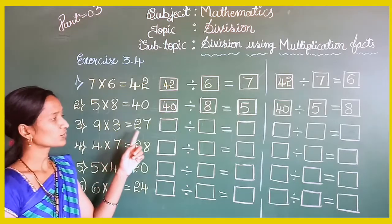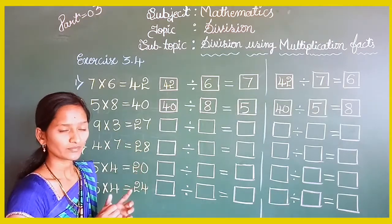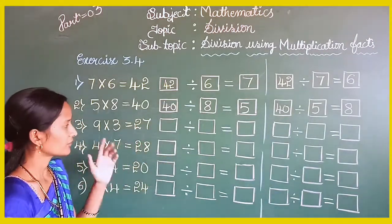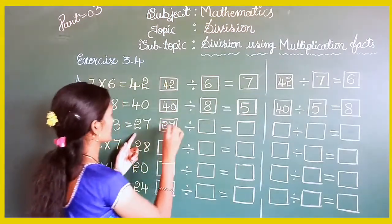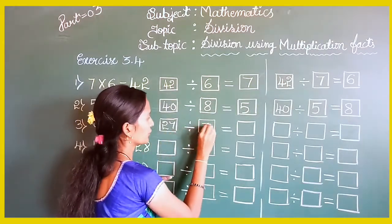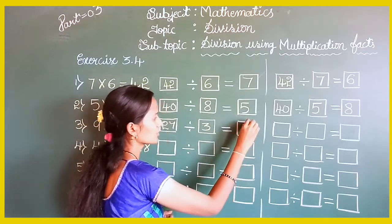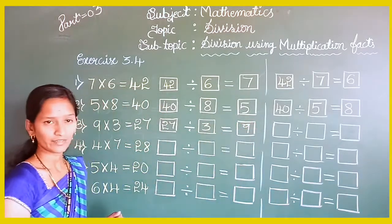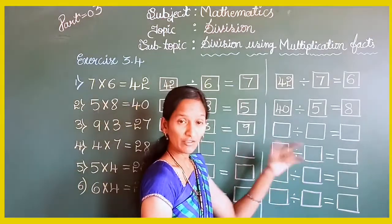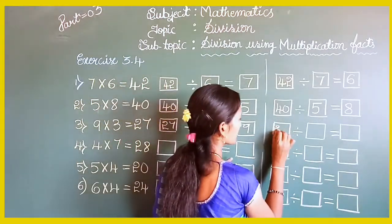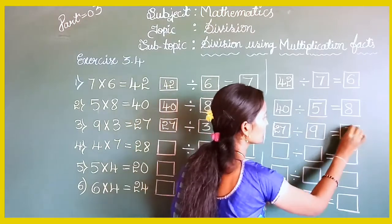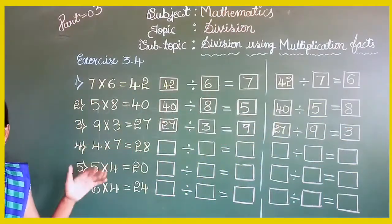Next: 9 into 3 equals 27. This is the given multiplication fact. Write down the division facts. First write 27, then divided by 3 — 27 divided by 3 equals 9. That is the first division fact. The second division fact: write 27 divided by 9 equals 3. That is the second division fact.